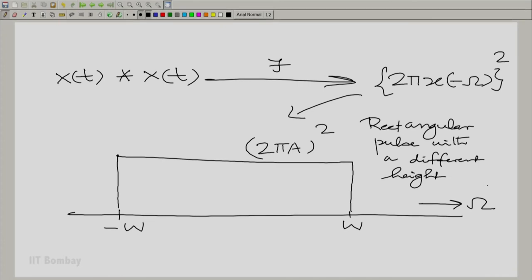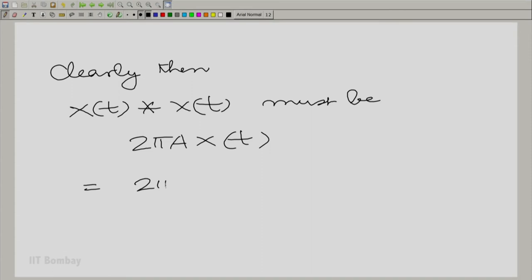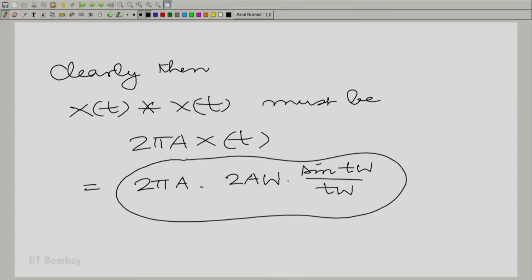Now, it is very easy to evaluate the inverse Fourier transform of this. All that you have done is to multiply the original function by 2πA. I can straight away write down the convolution of X(t) with X(t). Clearly then, X(t) convolved with X(t) must be 2πA times X(t), which is 2πA·2aW·sin(tW)/(tW). Answer without any calculation, with almost no calculation.